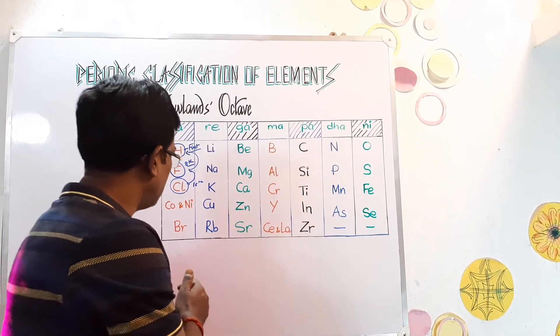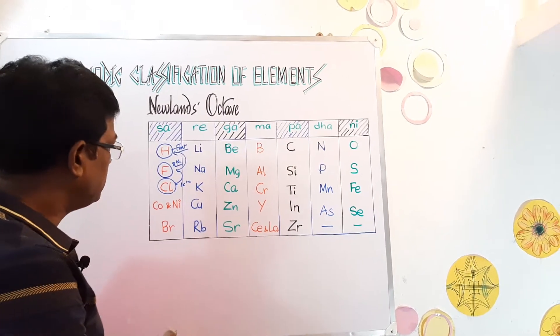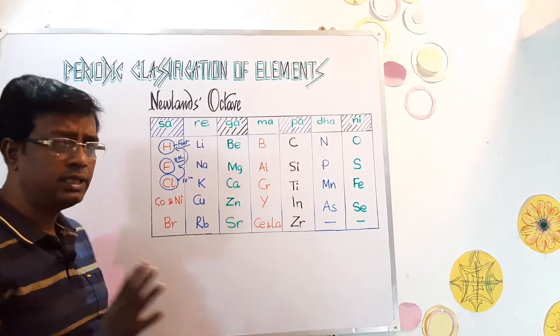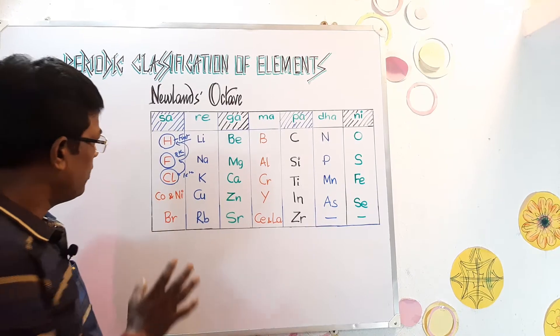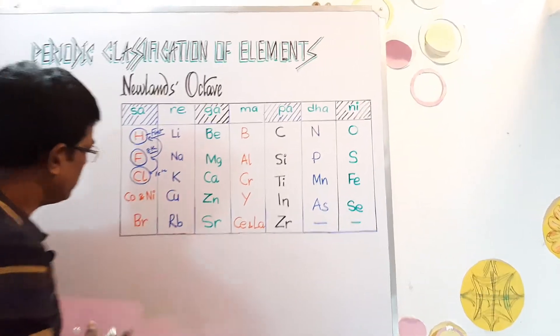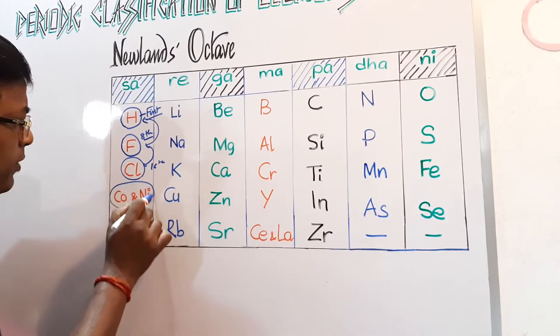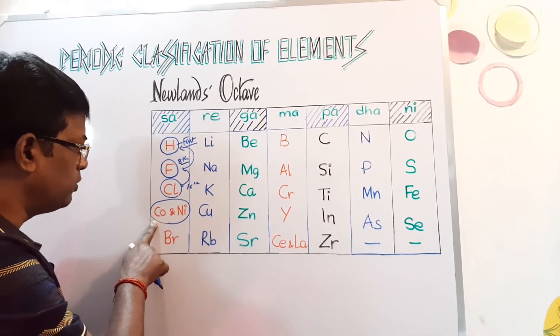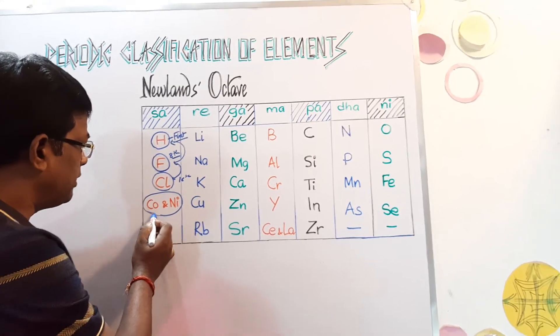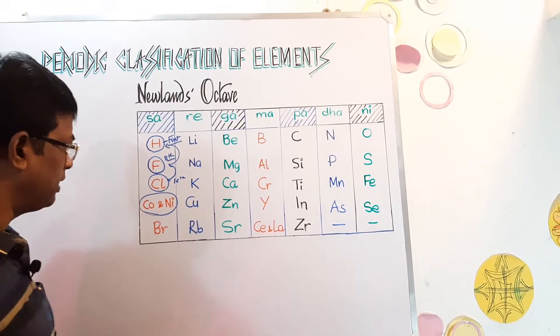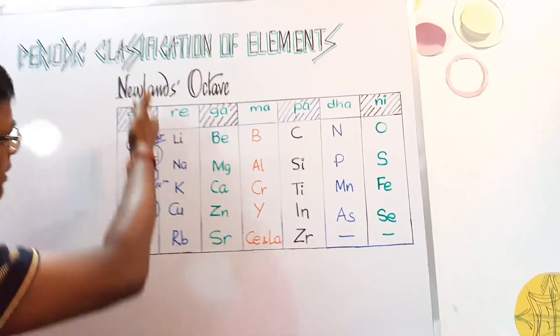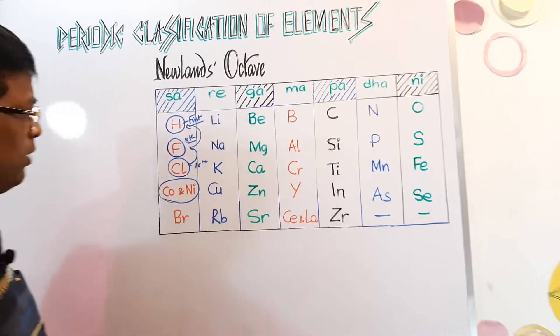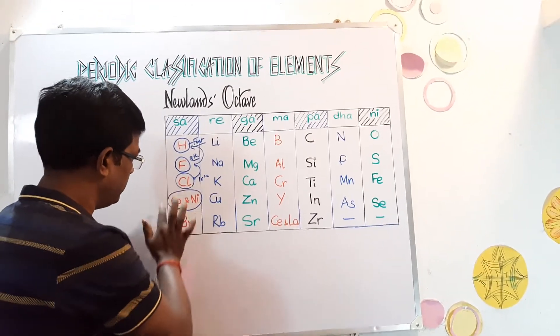One of the drawback is, another drawback is that he tried to fit elements. Now couple of the elements were fitted at the same slot. Individual spot were not given to Cobalt and Nickel. He thought that they are so similar that they should be clubbed together and put it in the first group here, in one group here, Sa group particularly.